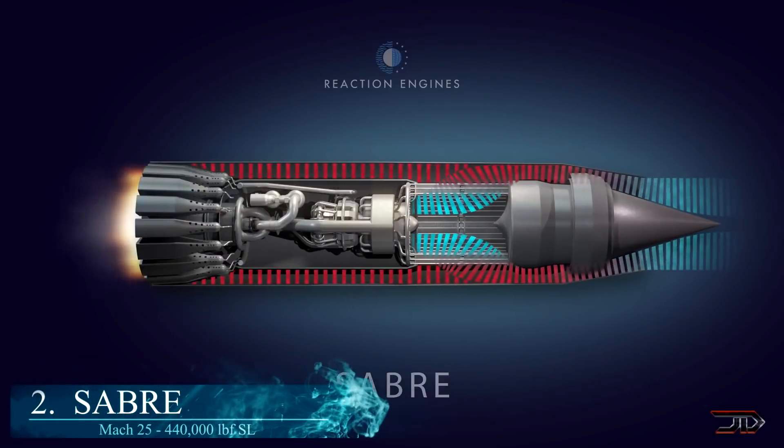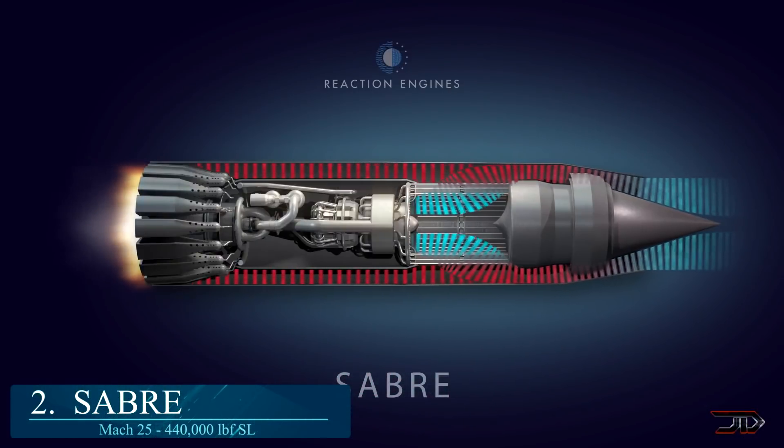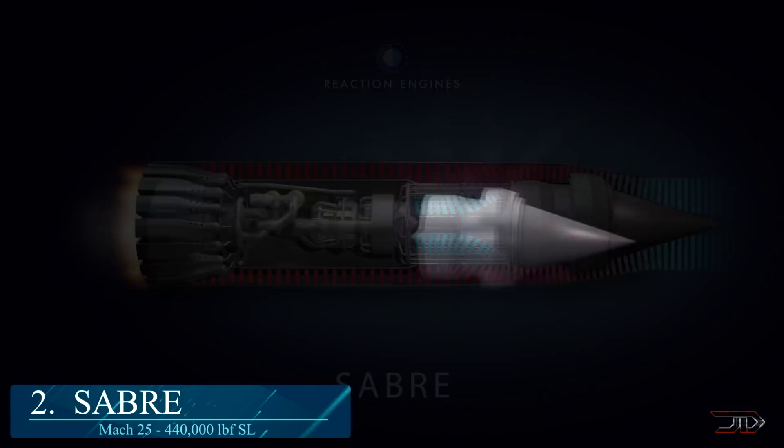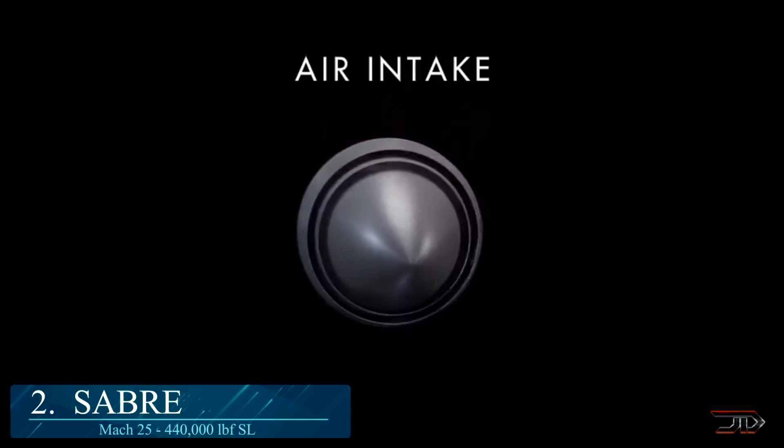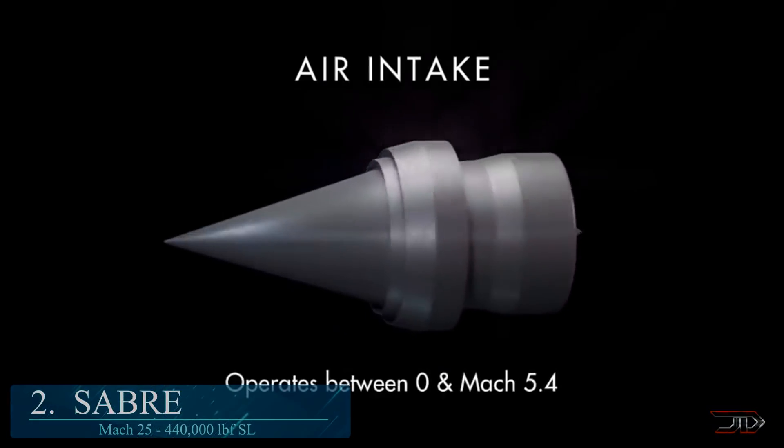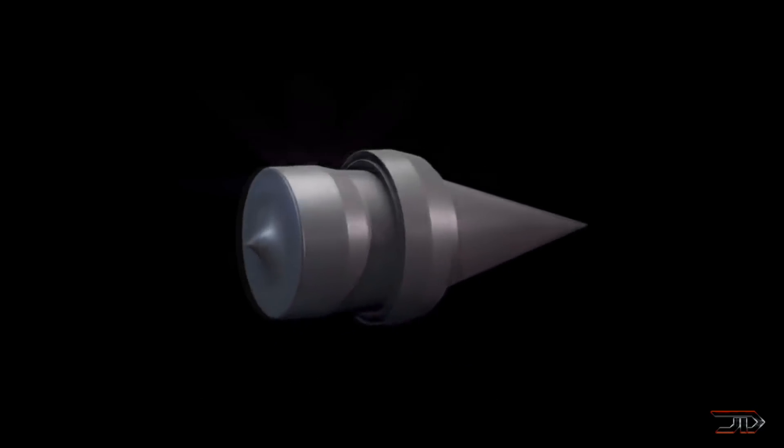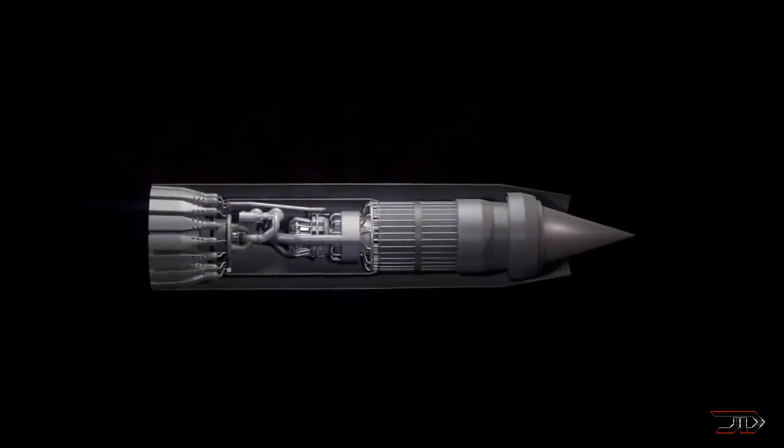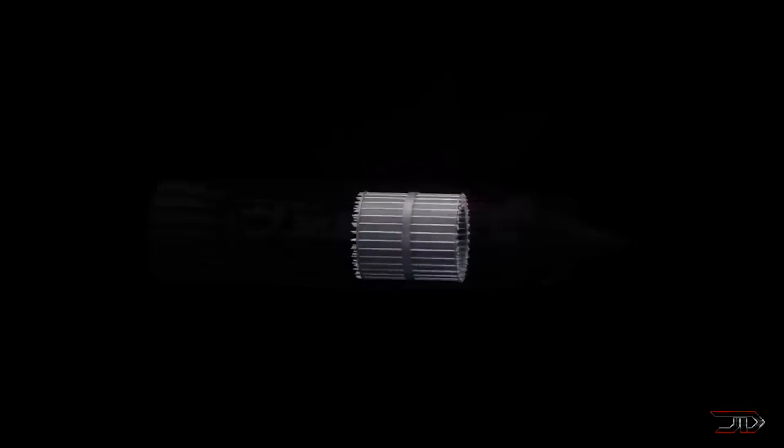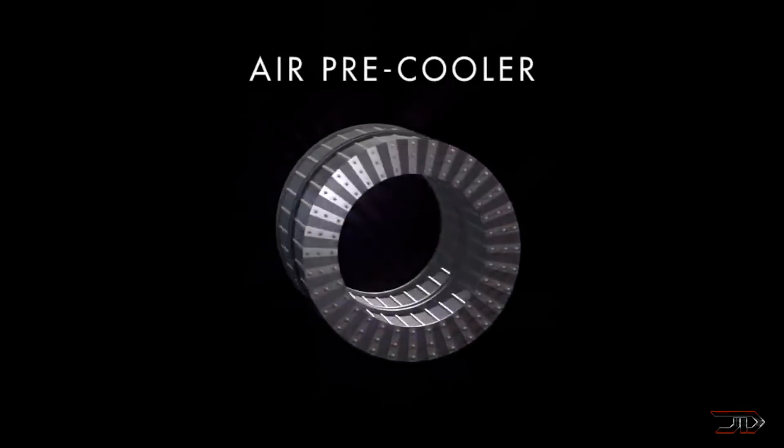We move on and look at one of the most important engines being developed right now, which is titled the Sabre. This engine works like a conventional jet engine up to Mach 5, and then it switches to a rocket mode to achieve Mach 25 or low Earth orbit. It's also 100% reusable, so it can be used on a space plane multiple times a day.